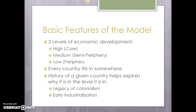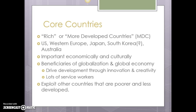We'll talk about it in more depth later, but you need a little bit just to help you understand why some areas are more developed than others. Our core countries are our rich countries, or more developed countries — you'll see that abbreviated as MDC, and you need to know that abbreviation. These core countries are the most important economically in terms of the global economy and the most important culturally in terms of popular culture. It's really a handful of areas: the US, Western Europe — France, Spain, Italy, Germany, the UK and those countries around there.